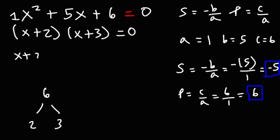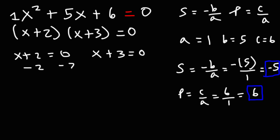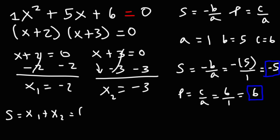Using the zero product property, we set each factor equal to zero. Subtracting 2 from both sides gives x equals negative 2. Subtracting 3 from both sides gives x equals negative 3. We call these our first and second roots. The sum of the two roots is negative 2 plus negative 3, which equals negative 5.